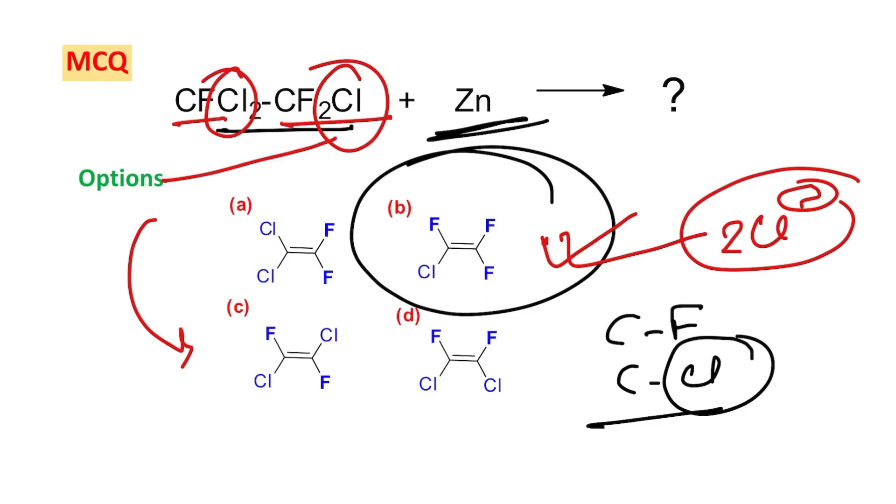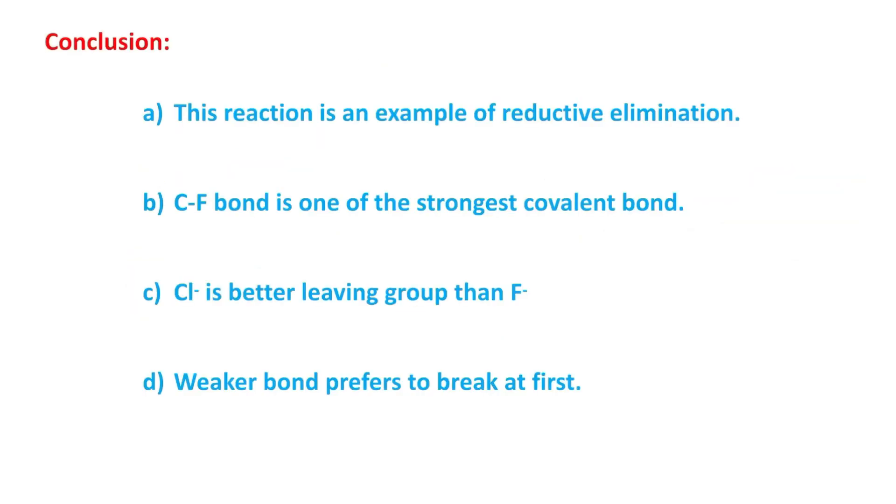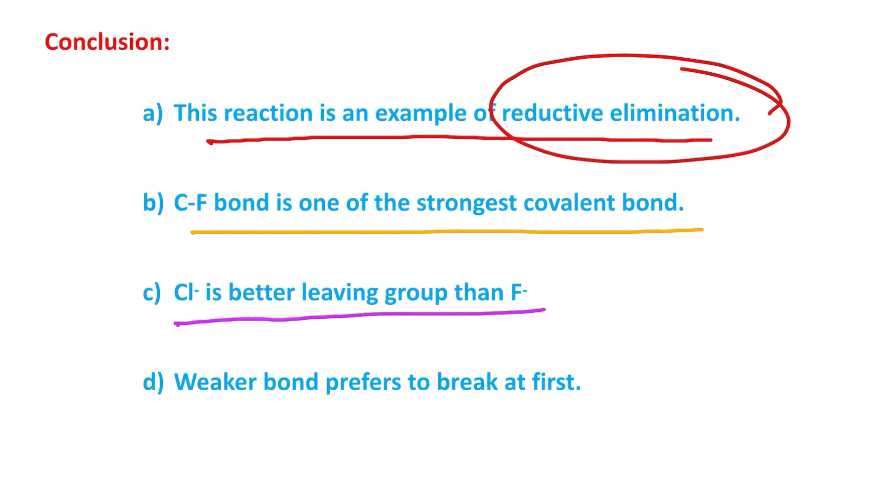What you have learned today: this reaction is an example of reductive elimination, because Zn²⁺ got oxidized and it reduces the carbon-chlorine bond. C-F bond is one of the strongest covalent bonds. Chloride is a better leaving group than fluoride, and weaker bonds prefer to break faster.